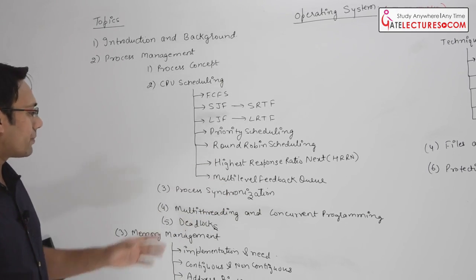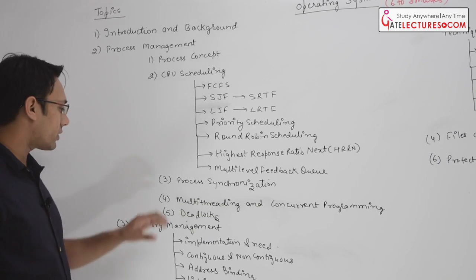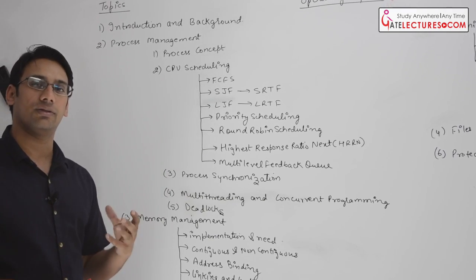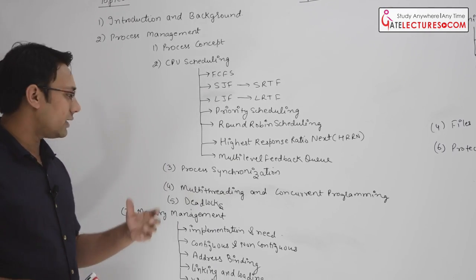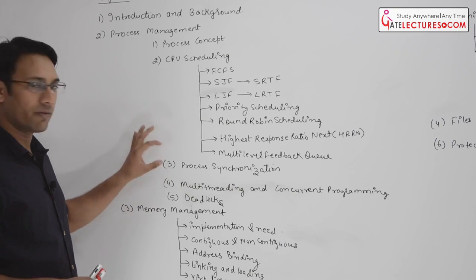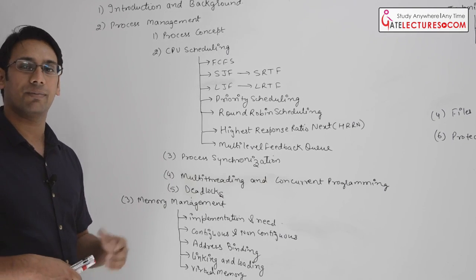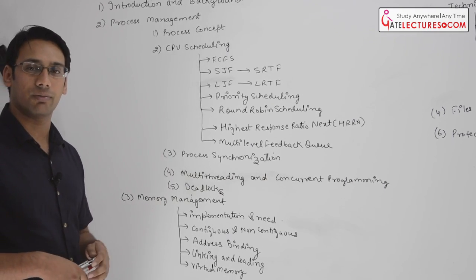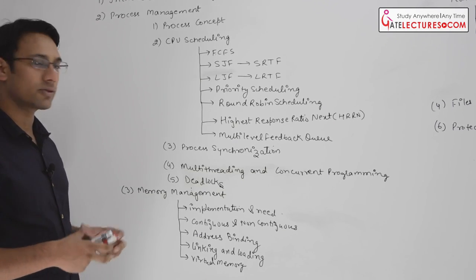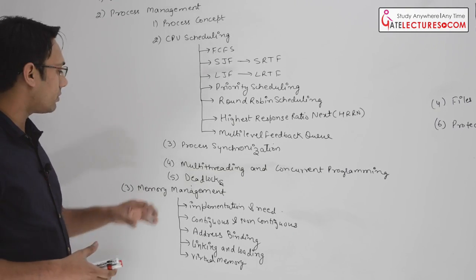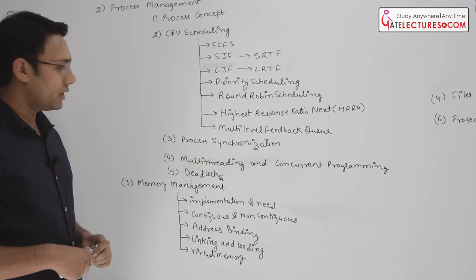Then we are going to discuss about process synchronization. Here we are going to discuss about different synchronization algorithms and different problems — for example, the Producer-Consumer problem and the Dining Philosopher problem. We are going to discuss all these problems in the process synchronization section.